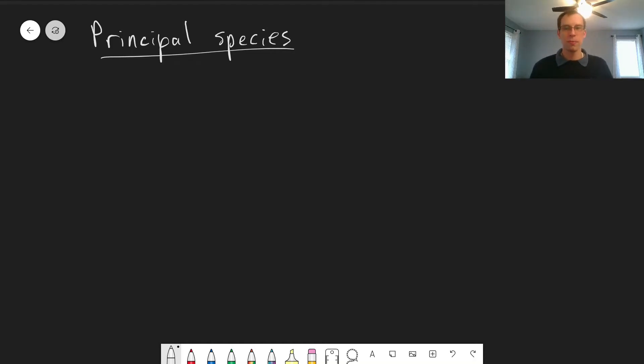One final topic I want to discuss with polyprotic systems is the idea of the principal species, meaning what is the species that's at the highest concentration in a given solution, depending on pH.